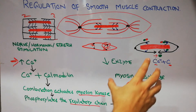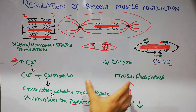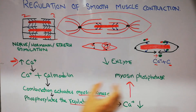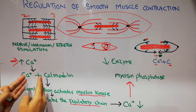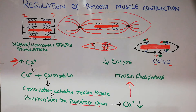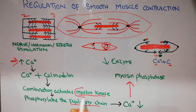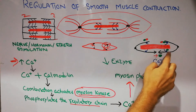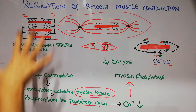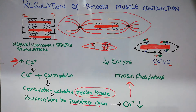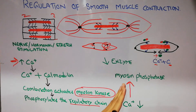As soon as the nervous, hormonal, stretch, or any other stimulus is gone or finished, the level of calcium in the smooth muscles decreases. All the processes get reversed — the combination of calcium and calmodulin is lost. However, the myosin kinase is still activated and the muscle is still contracting even though no stimulus is coming. To stop this muscle contraction after the decrease in calcium level, another enzyme gets activated, known as myosin phosphatase.